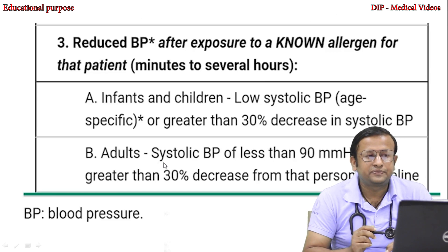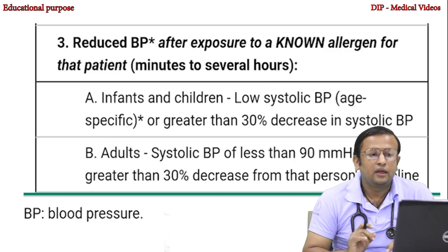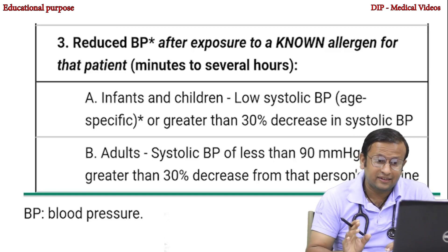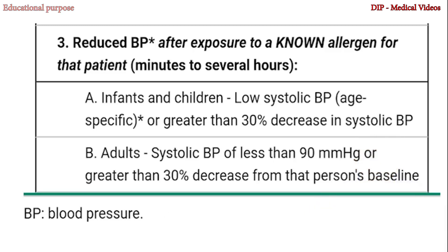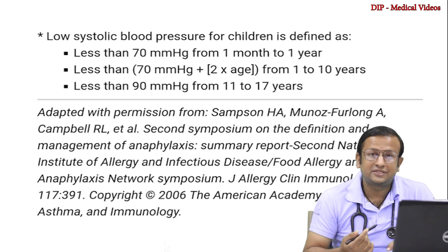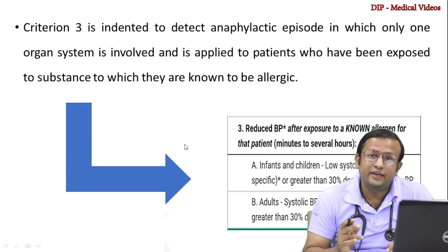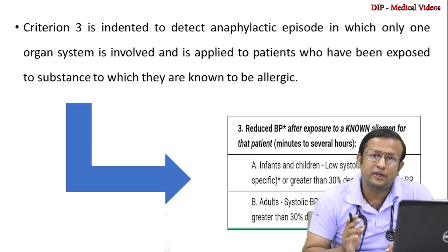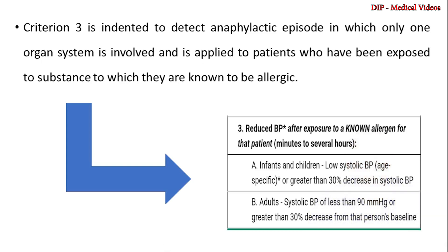Criterion three: reduced blood pressure after exposure to a known allergen for that patient. In infants and children, low systolic pressure or greater than 30% decrease in systolic pressure. In adults, systolic blood pressure of less than 90 mmHg or greater than 30% decrease from that person's baseline. Criterion three is intended to detect anaphylactic episodes in which only one organ system is involved and is applied to patients known to be allergic to the substance.